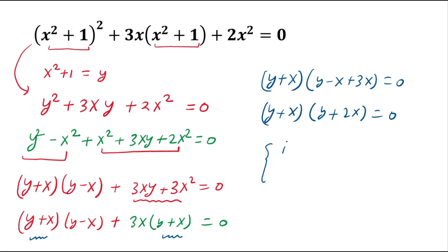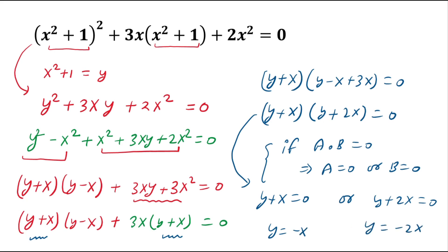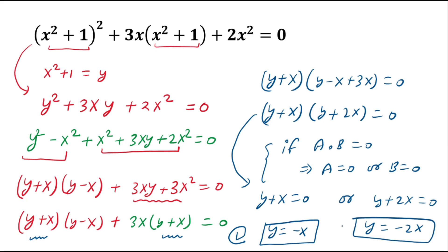We have a product of two expressions equal to zero. By the zero product property, if a × b = 0, then a = 0 or b = 0. So either y + x = 0 (Case 1) or y + 2x = 0 (Case 2), giving y = -x or y = -2x.